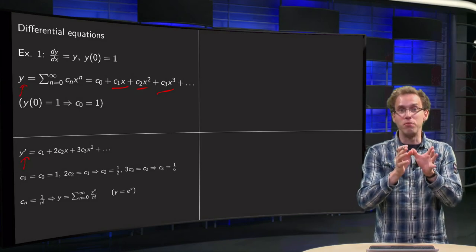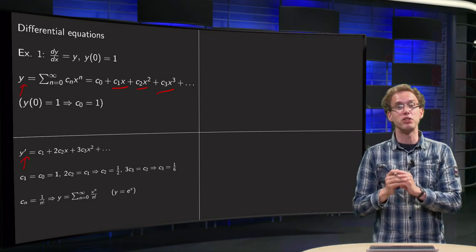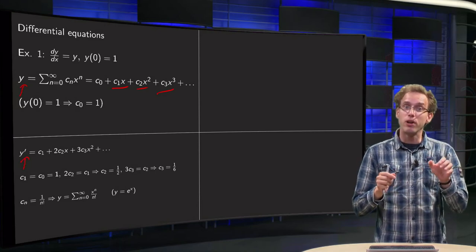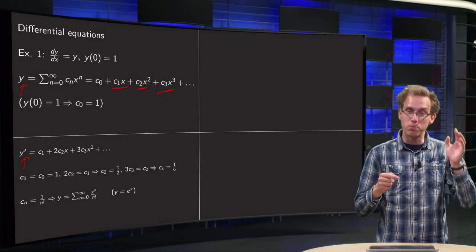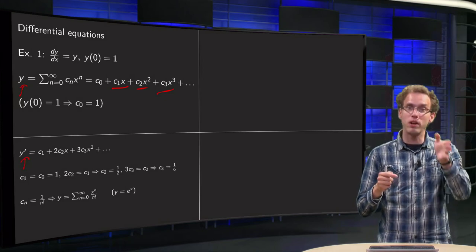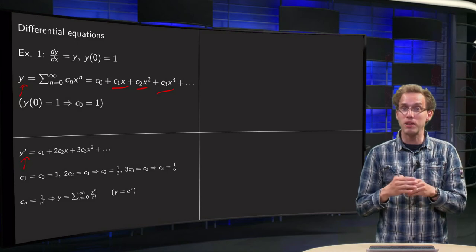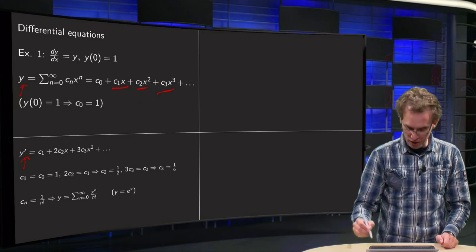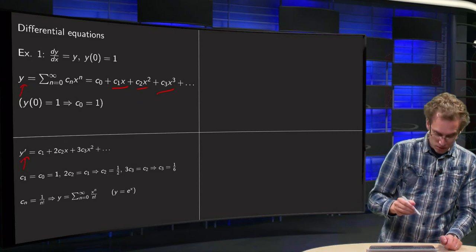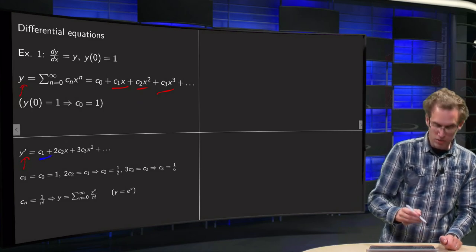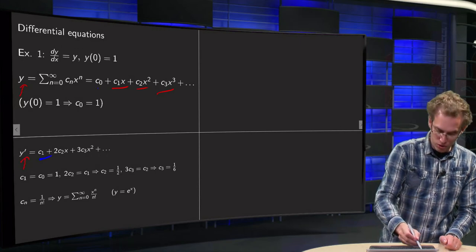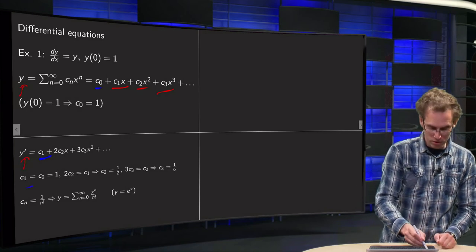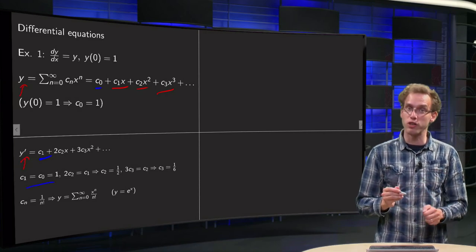Now we have a power series for y prime that has to equal another power series for y. Two power series are equal if all the coefficients in front of x⁰, x¹, x², x³, etc. are equal on both sides. Starting with the x⁰ term: c1 equals c0. Since c0 equals 1, c1 also equals 1.